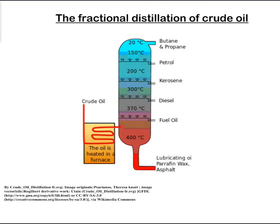Because it's a mixture we cannot use it as such on its own. What is important is that we take this black mixture and distill it to bring about the different constituents that are available. So what happens is we take the crude oil and heat it in a furnace to about 400 degrees Celsius, and then the crude oil at 400 degrees Celsius is passed through this tower that we have here.